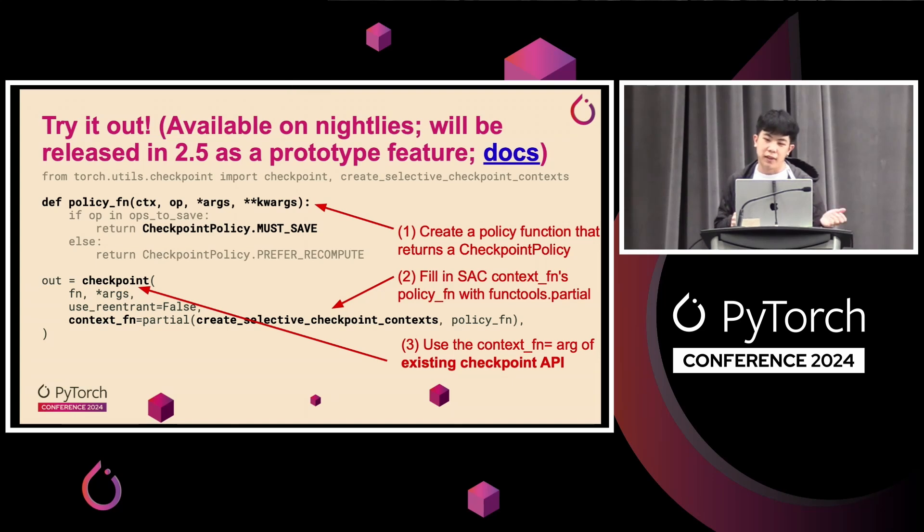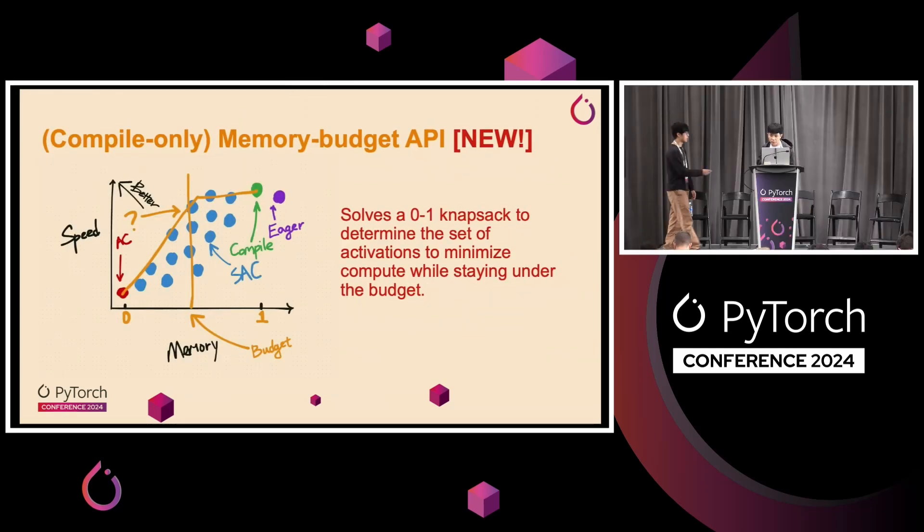And finally, I'll finish off with saying that you can try out SAC today on nightlies, and you only need to use the existing checkpoint API and pass in sort of the context function. And yeah, feel free to look at the docs, which are linked. Next I'll introduce Horace to talk about memory budget.